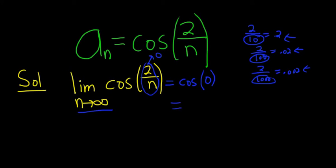And then the cosine of 0 is equal to 1. So the answer to this problem is 1. This is called the limit of the sequence.